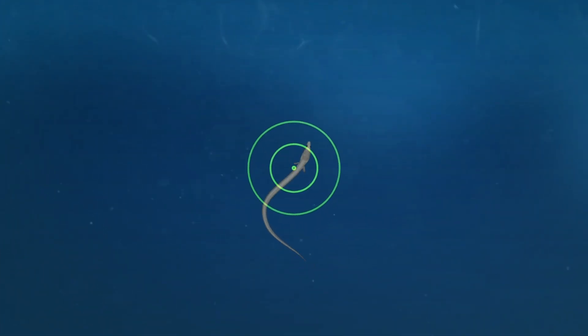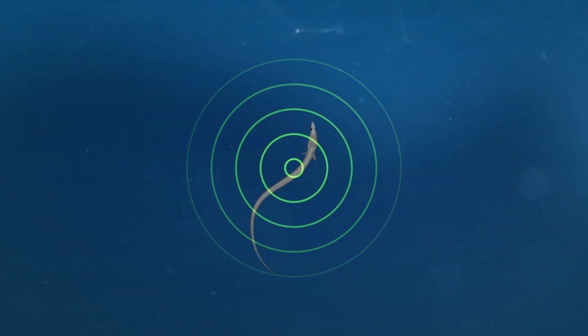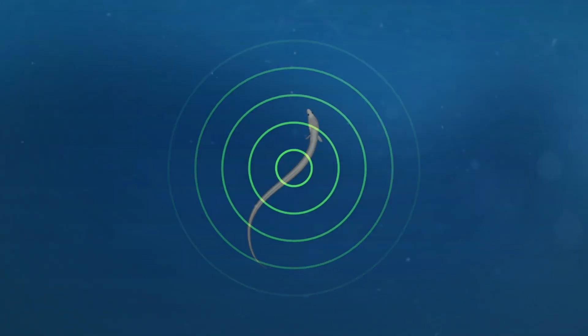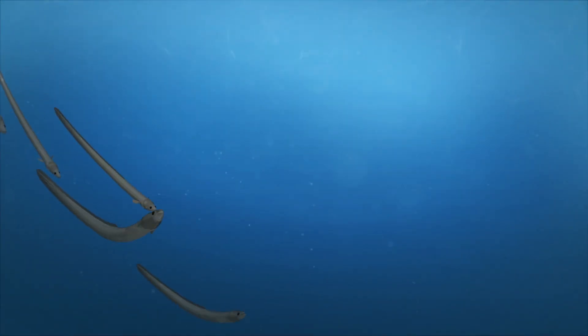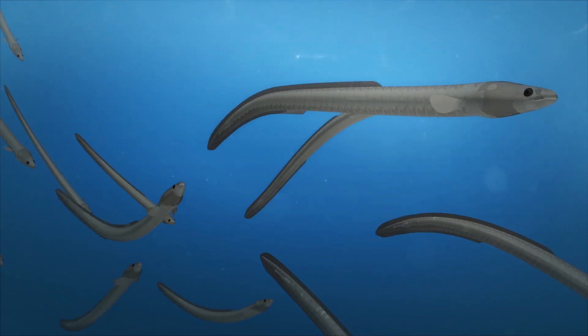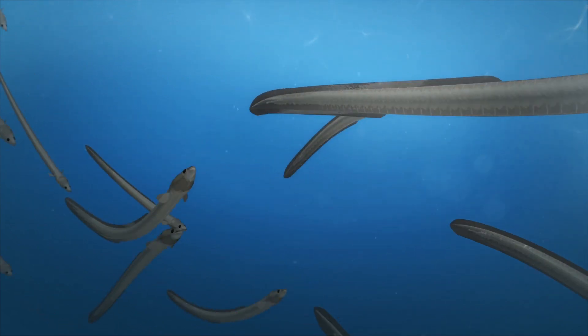New research from the University of Miami and Norway's Institute of Marine Research has found that European eels at a certain stage of development use an internal magnetic compass to remember the magnetic direction of tidal waves as they navigate the waters.